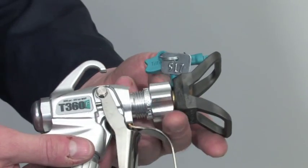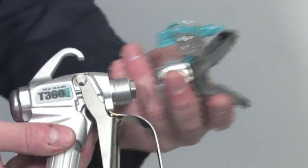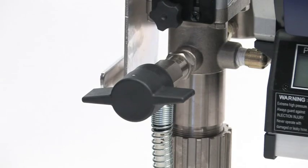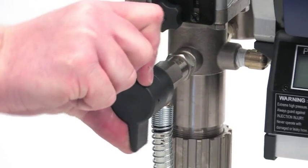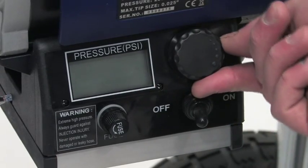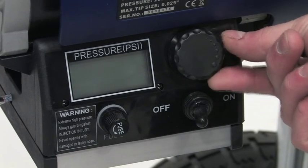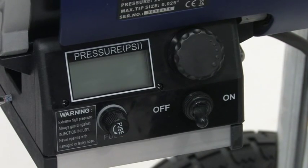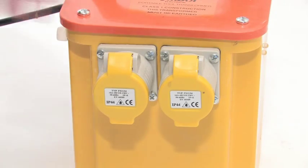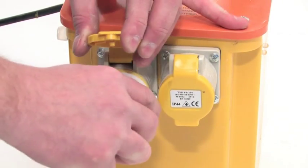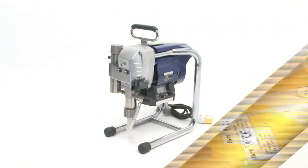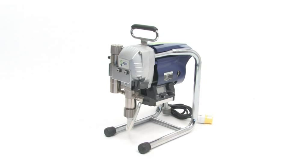Now unscrew the tip guard assembly from the spray gun. Make sure that the power switch is off. Turn the spray prime valve to the vertical position and make sure the pressure control knob is turned completely to the left. This is the off position, or minimum pressure. Now go ahead and plug the sprayer into the correct electrical power supply. Make sure the plug is fully inserted. Well, that's it for the assembly.